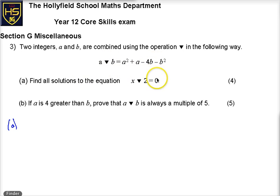And it asks us to find the solutions of the equation X triangle 2 equals 0. So let's find out what triangle 2 is going to do, and all we've got to do is compare that for X and that for X triangle 2. So it gives us X squared plus X, and then the 2 which is B is minus 4 lots of B, 4 lots of 2 minus our B squared, in our case it's 2.